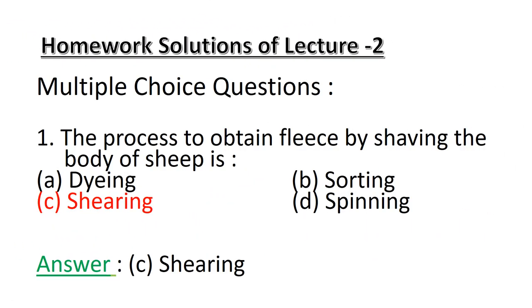Multiple Choice Question 1: The process to obtain fleece by shaving the body of sheep is: A. Dyeing, B. Sorting, C. Shearing, D. Spinning. If you have marked option C as the correct answer, then you are right. Because dyeing, sorting, and spinning are the processes which denote different work rather than shaving the body.